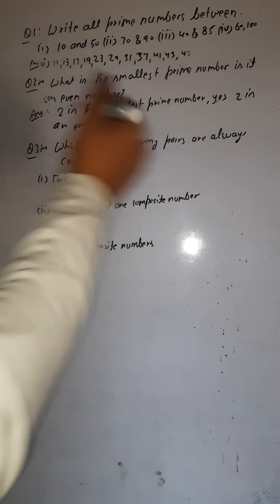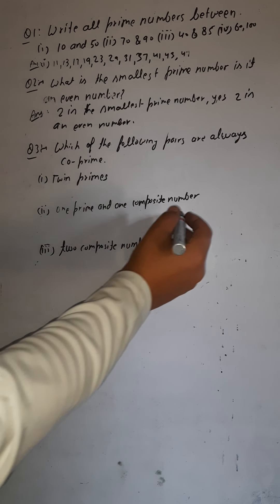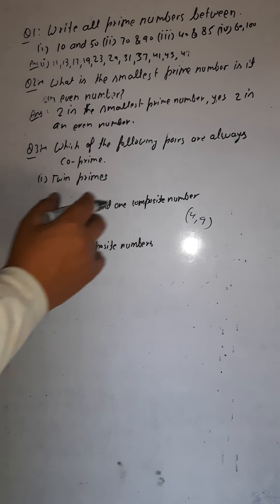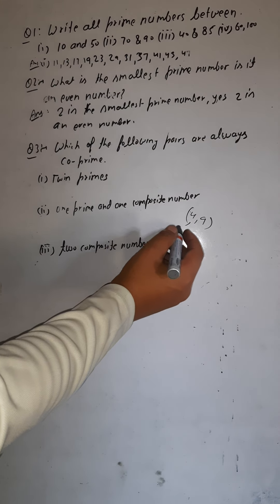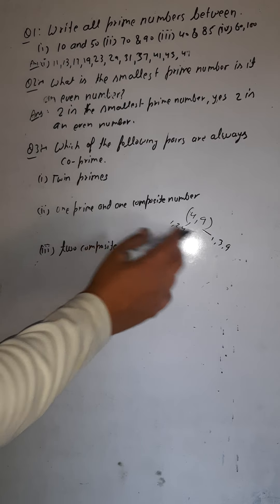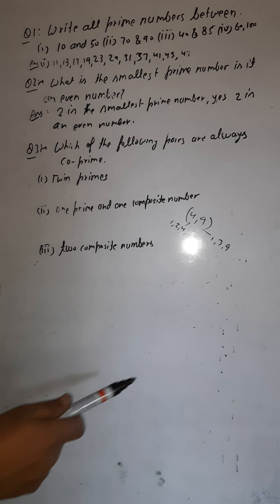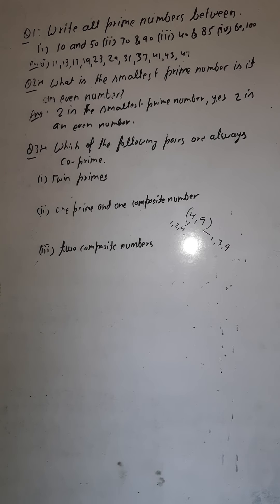Next question: which of the following pairs are always co-prime? Co-prime numbers are numbers which do not have any common factor other than one. For example, four and nine are co-prime numbers. The factors of four are 1, 2, and 4; the factors of nine are 1, 3, and 9. The only common factor is one, so four and nine are co-prime numbers.